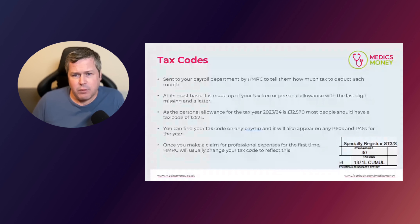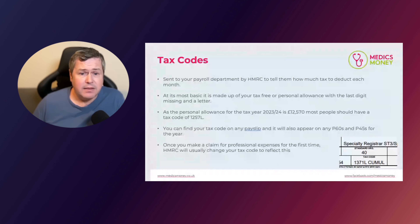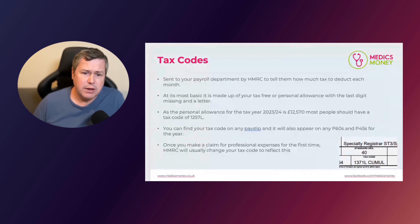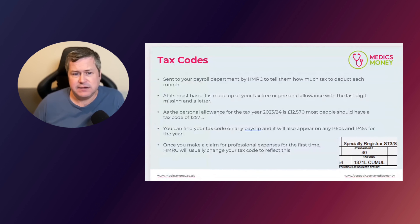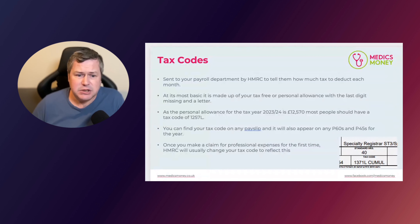But it works the other way as well. If HMRC think they are going to owe you tax relief, they will increase the number in your tax code. If you are a healthcare professional or doctor with the standard 1257L tax code, you may be overpaying income tax — because if you claim tax relief for allowable professional employment expenses such as GMC fees, Royal College fees, indemnity insurance, or BMA fees, HMRC should change your tax code to give you that tax relief every month.